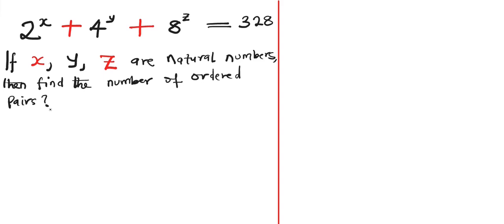Hello viewers, welcome to my YouTube channel. In this video, we have this interesting exponential equation: 2 to the power of x plus 4 to the power of y plus 8 to the power of z equals 328. We are told that if x, y, and z are natural numbers, then find the number of ordered pairs. So we are going to proceed to solve this problem without wasting time.